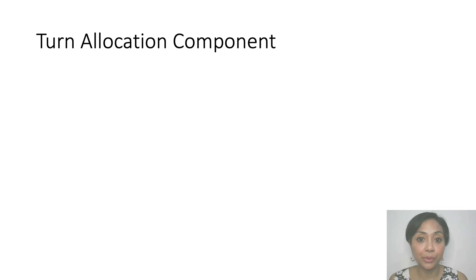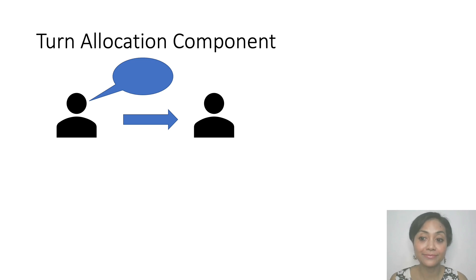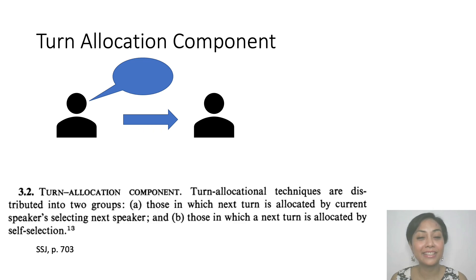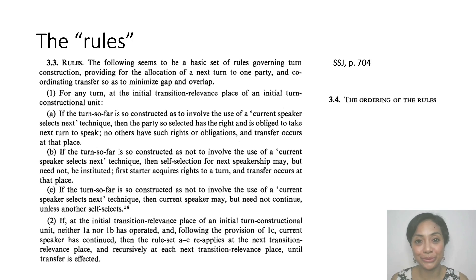The other component — the turn allocation component — is a collection of rules that govern how people select the next speaker, and what happens when they don't. Turn allocation techniques are distributed into two groups: those in which the next turn is allocated by the current speaker selecting the next speaker, and those in which the next turn is allocated by self-selection. The rules are pretty straightforward, but there are a lot of them, so I'm saving them for the next video.